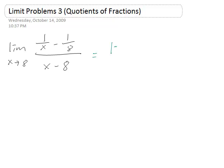We could do a little bit of algebra to do some canceling and solve this limit. The trick here is to notice that the top is a difference of two fractions, and you can combine them into one fraction by using a common denominator. So you have 8 over 8x minus x over 8x, all over x minus 8.